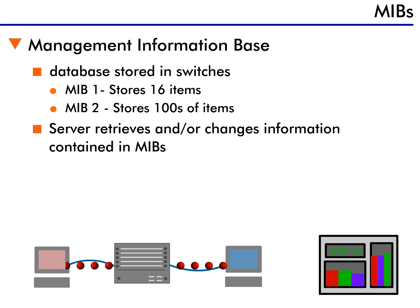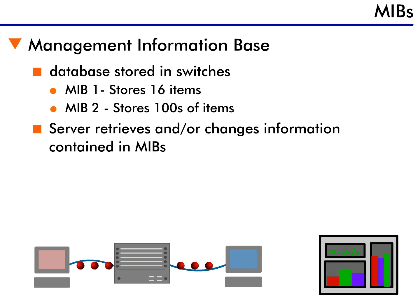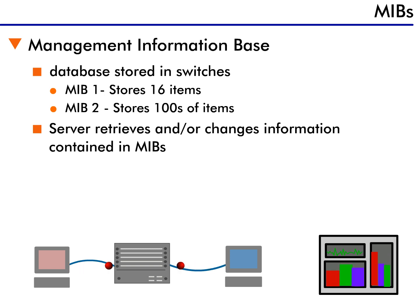The best way to think of the management information base is as a large file cabinet. As the switch is operating, statistics are stored in the file cabinet. MIB 1 only had 16 files, so that's all the information it could record.